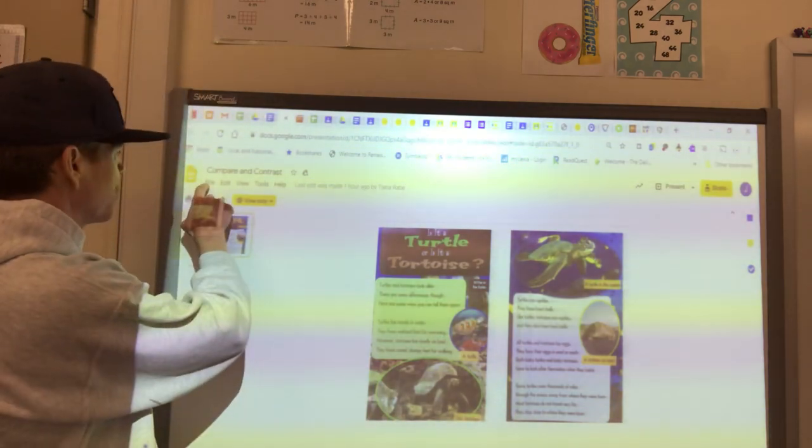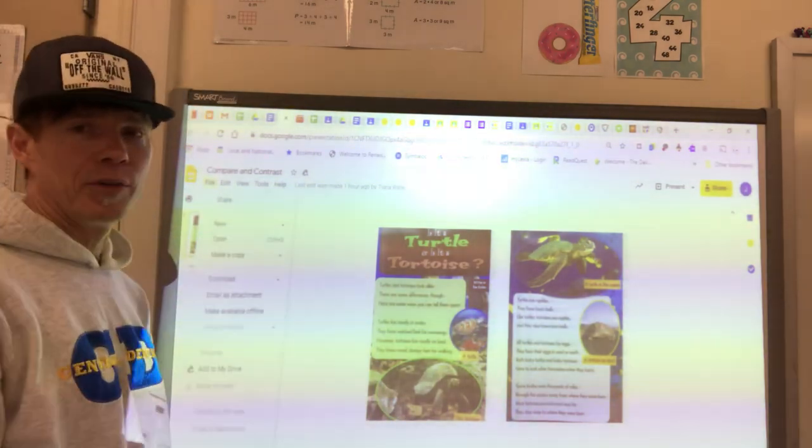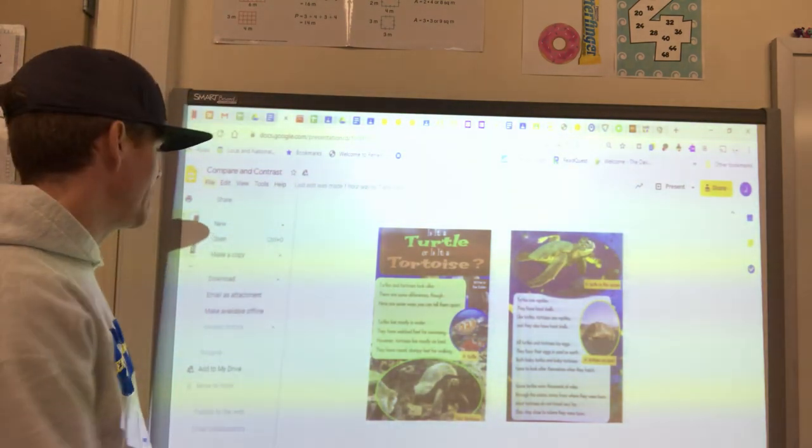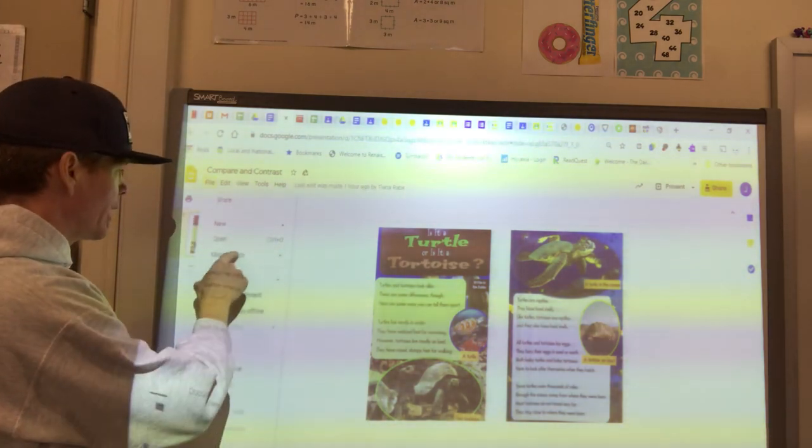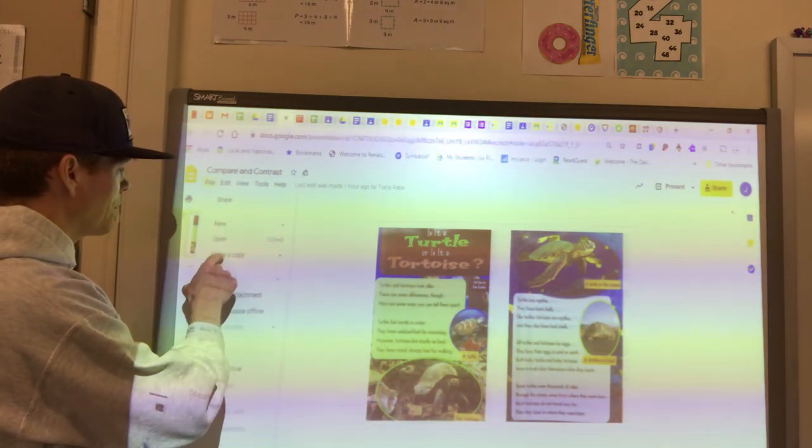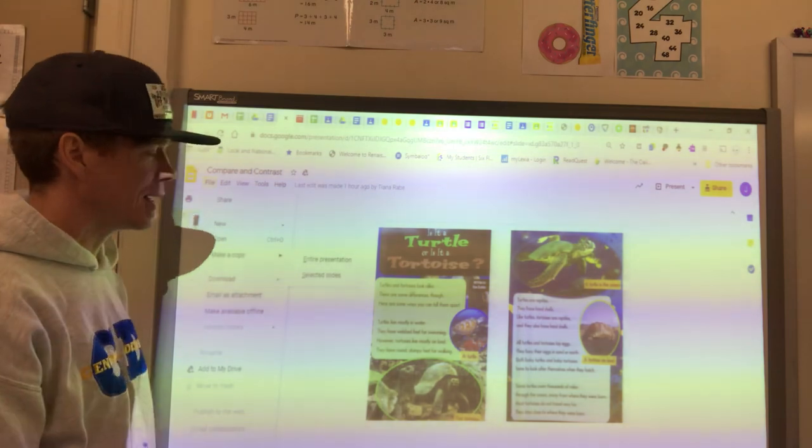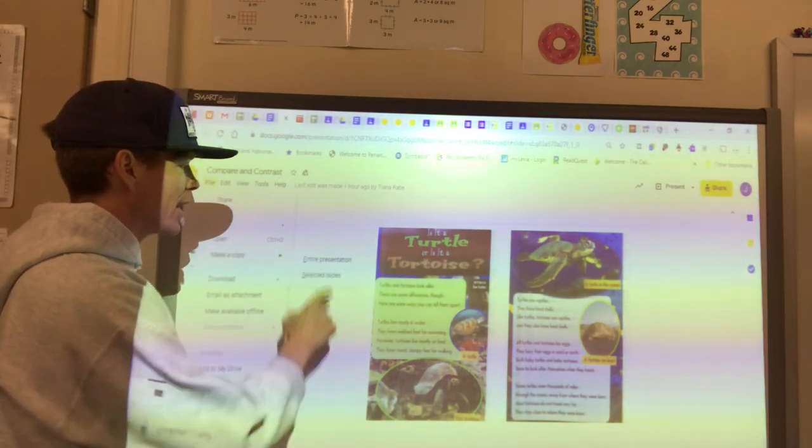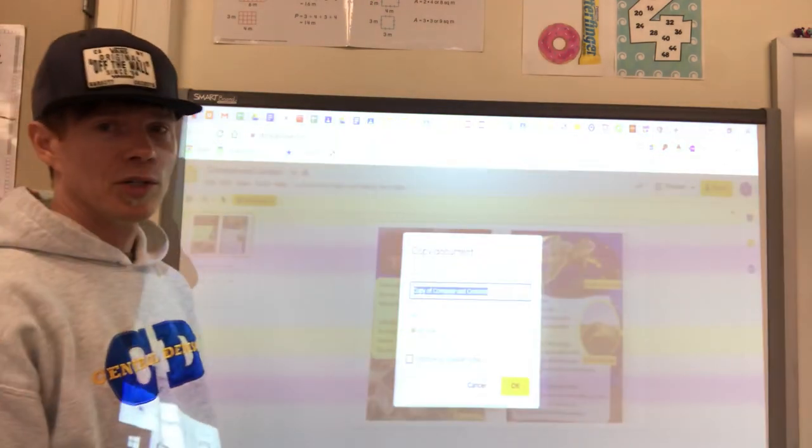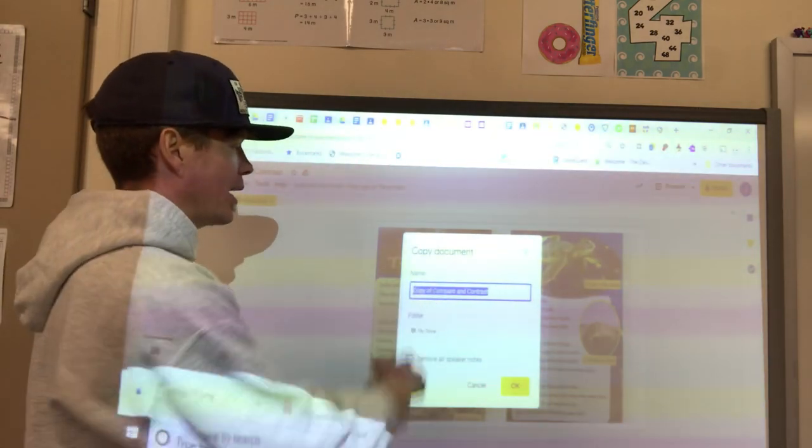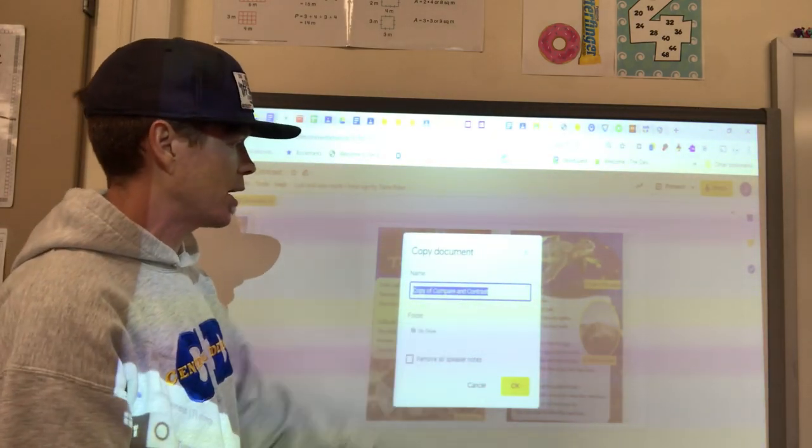So what you need to do is go to the word file here, click on the word file and it's going to bring you into a drop down menu. If you go down to the third one down, it says make a copy. So if you click on make a copy and you click on the entire presentation, it's going to pop up this for you and it says copy document. It has a name. It says copy of compare and contrast.